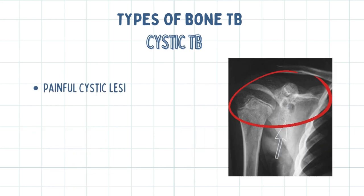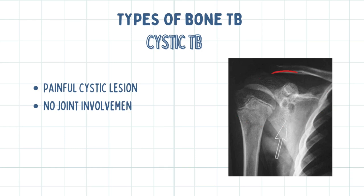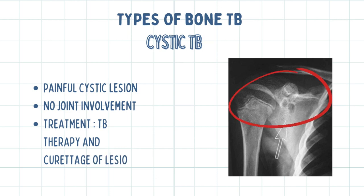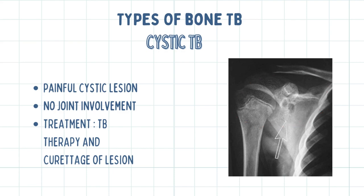With cystic TB, there is a painful cystic lesion of a bone with no joint involvement. Treatment involves curettage of the lesion in addition to TB therapy. This picture shows cystic TB of the scapula in a young boy.